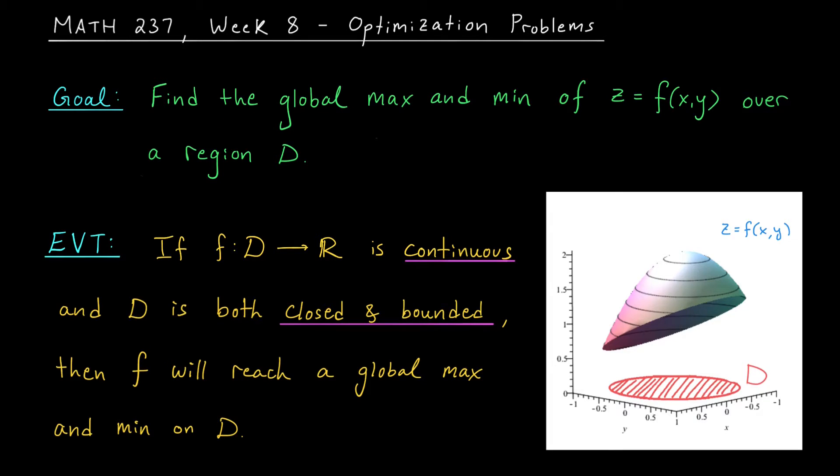One of the most important results we have on this topic is the extreme value theorem. This is a guarantee that under certain conditions, your function will indeed have a global max and min. You might remember this result from Math 137, but it turns out that it holds in this setting as well. It says that if you have a function that's continuous over the set D,